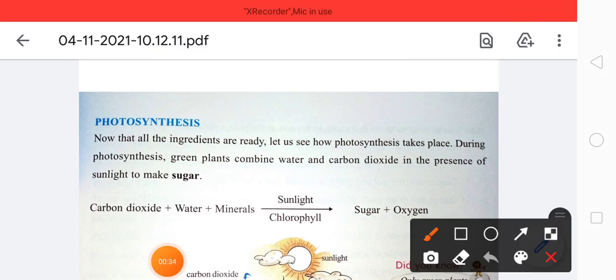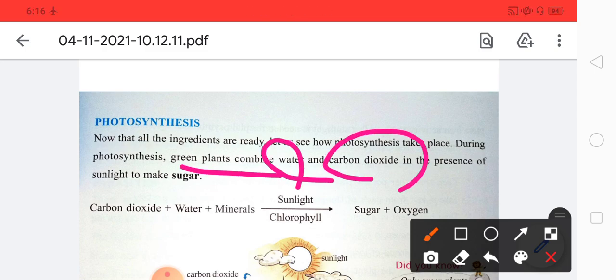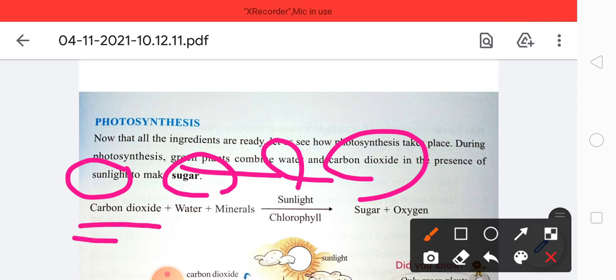We already know that photo means light and synthesis means together. Now that all the ingredients are ready, let us see how photosynthesis takes place. During photosynthesis, green plants combine water and carbon dioxide in the presence of sunlight to make sugar.